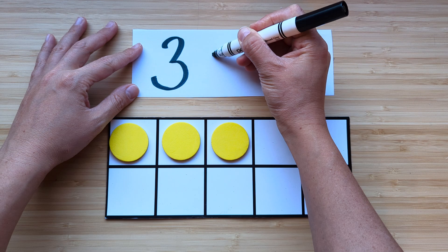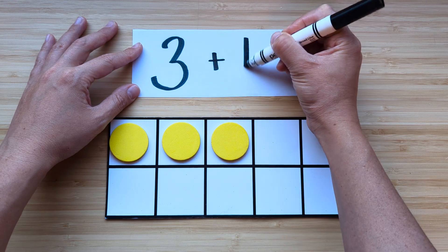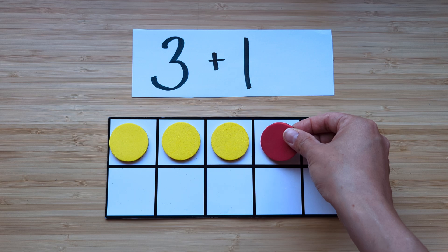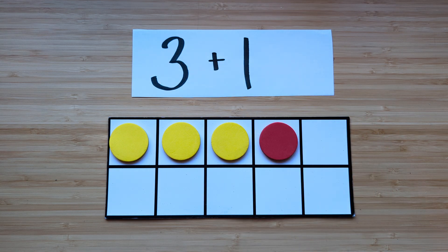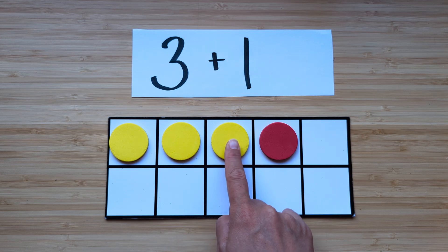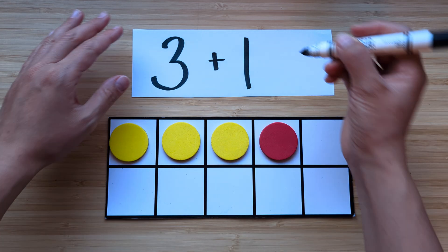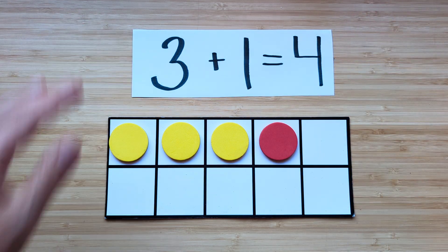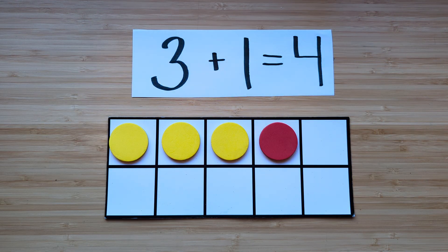What's one more than three? Let's count. One, two, three, four. One more than three is four. Nice job.